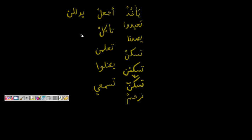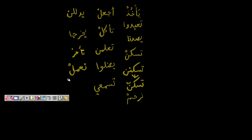يَدْلُلْنَ stays unchanged because the feminine plural noon does not drop. يَخْرُجَانِ — those two men exit — drops the noon to become يَخْرُجَا. تَأْمُرُ — she or you commands — becomes تَأْمُرْ. نَعْمَلُ — we do — becomes نَعْمَلْ. And يَظْلِمْنَ — they oppress — the noon stays; no change.